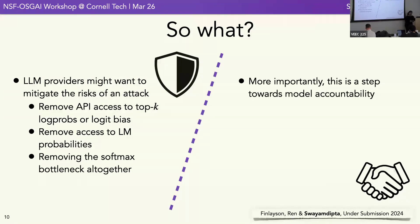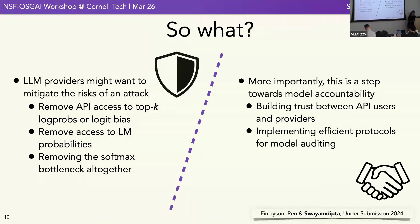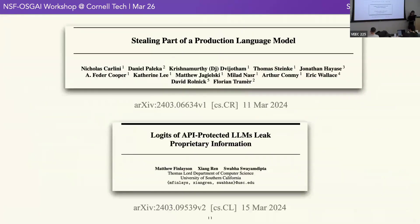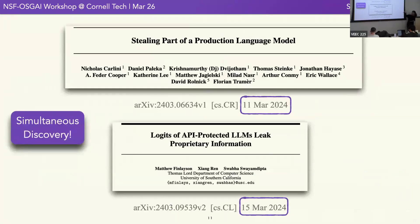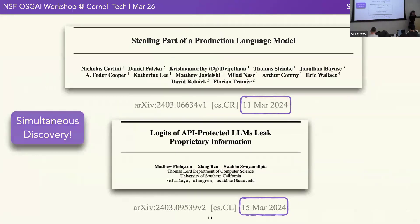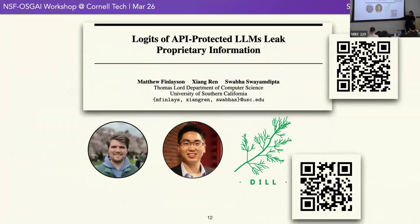More interestingly, this is a step toward model accountability. Releasing something like a model signature will help build trust between API users and providers, enable efficient protocols for model auditing, and help verify language model identity and ownership. One last note: this was a simultaneous discovery — our paper came out the same week as a Google paper on exactly the same idea, though we were able to discuss the size of OpenAI models. Thanks to my student Matt who did most of the work, and collaborator Sean, also at USC.